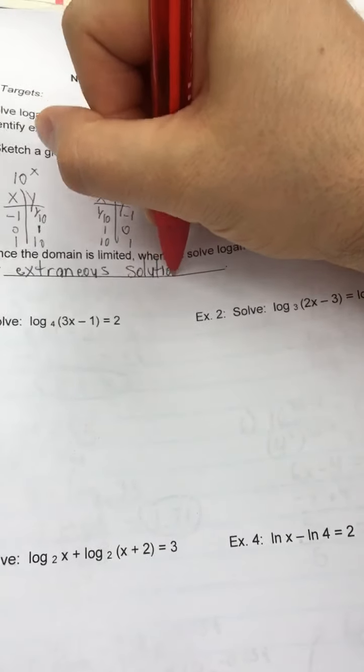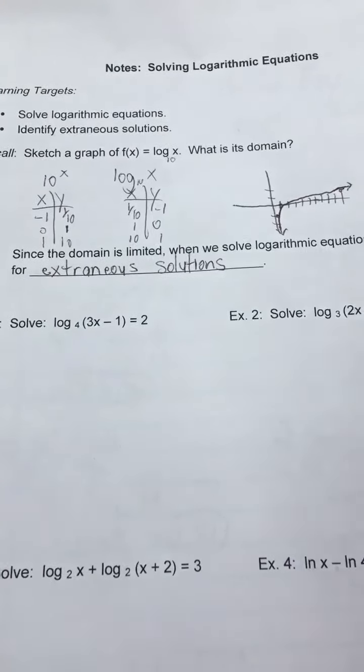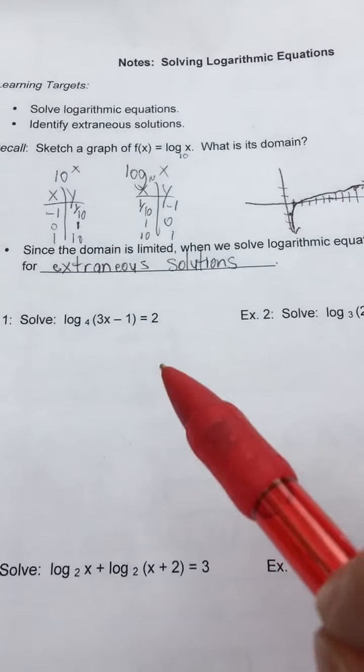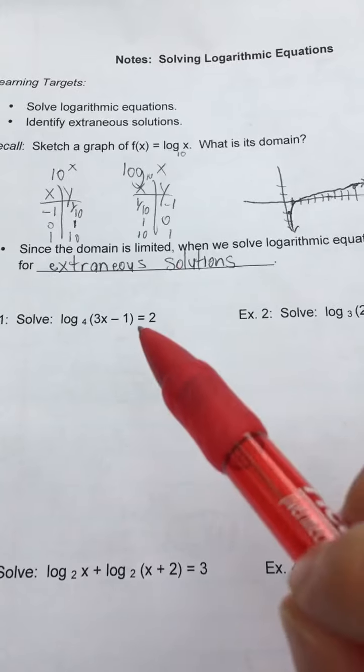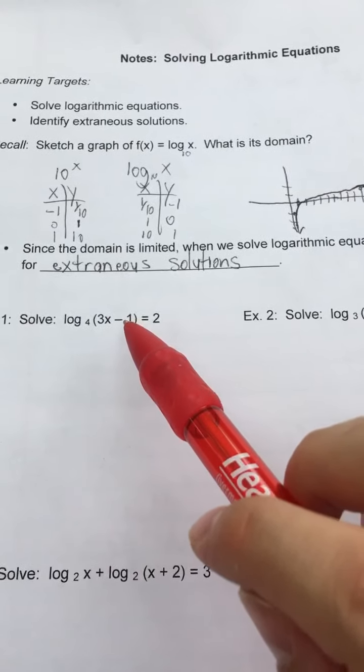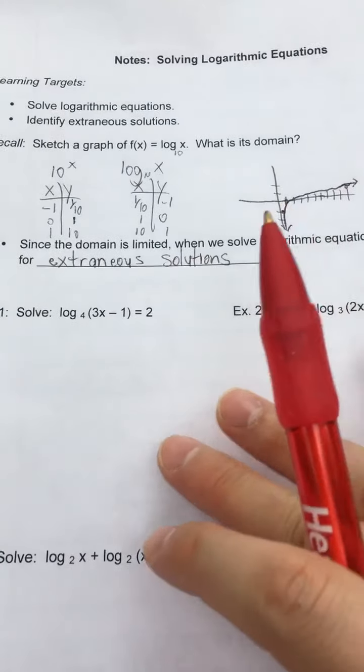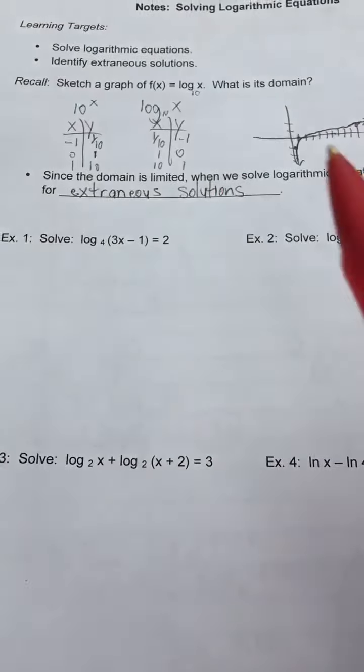E-X-T-R-A-N-E-O-U-S. Extraneous solutions. What that means is every once in a while, not that often, but every once in a while, when we're solving these problems, we work it out, we get an answer that doesn't actually work in the original problem. You have to go back and plug them in. Just make sure you're not getting a negative number or a zero inside your log when you work it out.